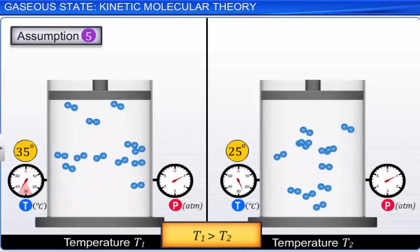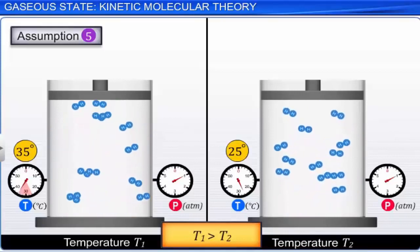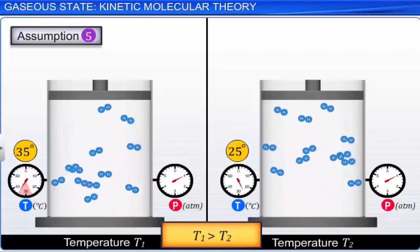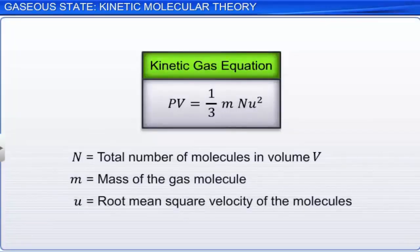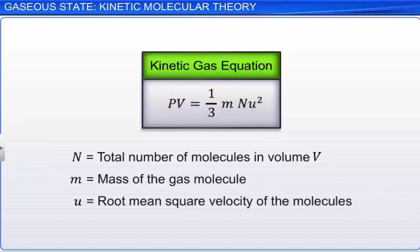Based on these assumptions, an equation for the pressure of a gas is derived as PV equals 1/3 times m times n times u², where n is the total number of molecules in volume V, m is the mass of the gas molecule, and u is the root mean square velocity of the molecules. This is called the kinetic gas equation.